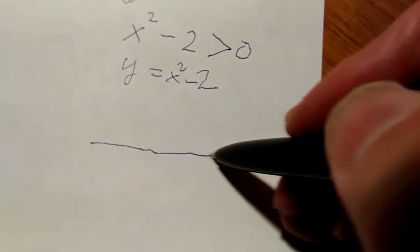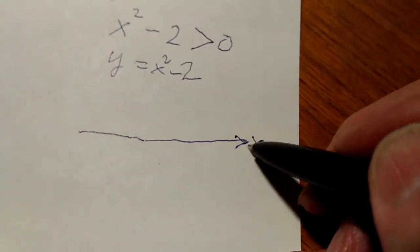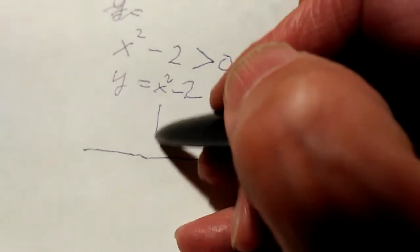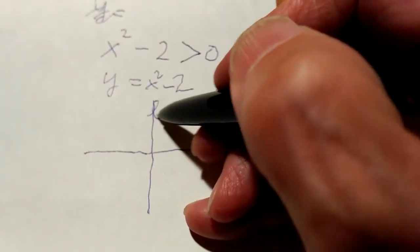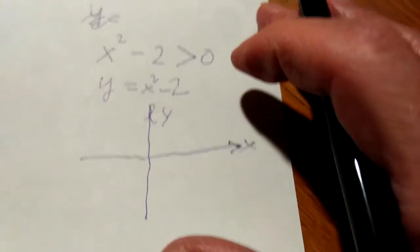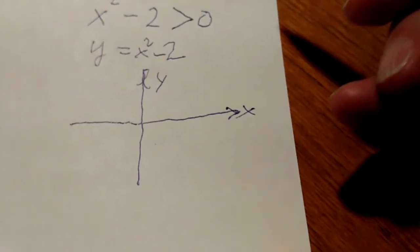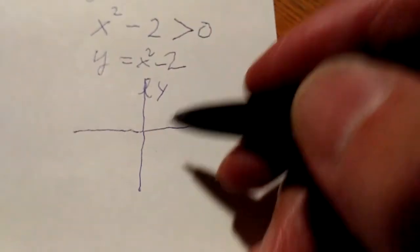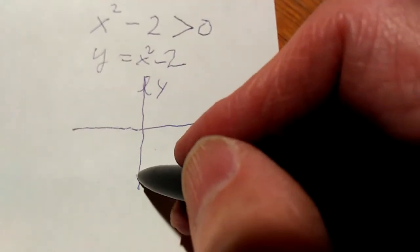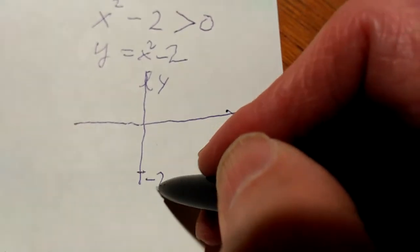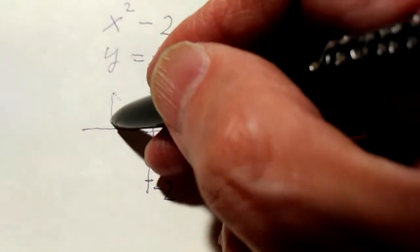This is the x-axis and the y-axis. Now this is a parabola and the parabola looks like this. Minus 2 is the y-intercept and the parabola opens up like this.